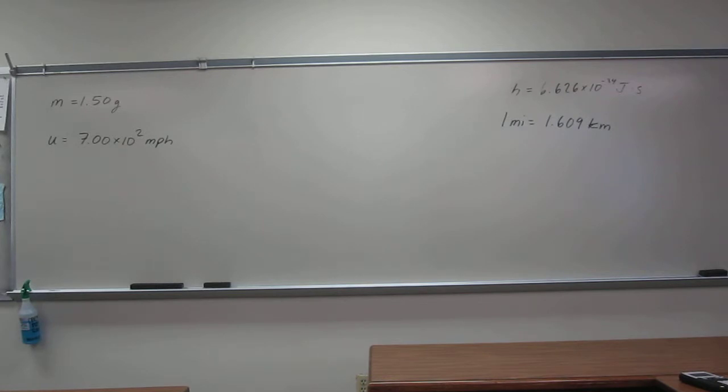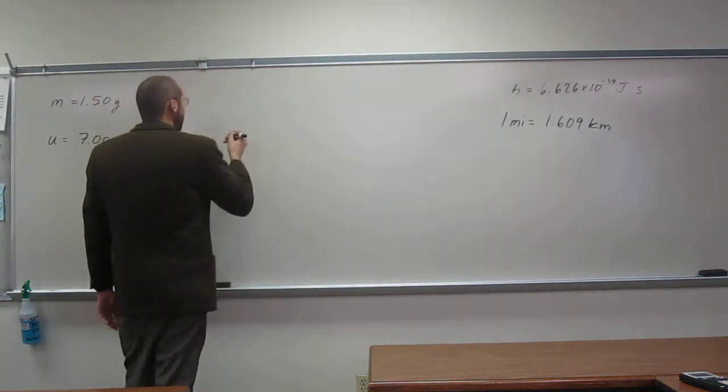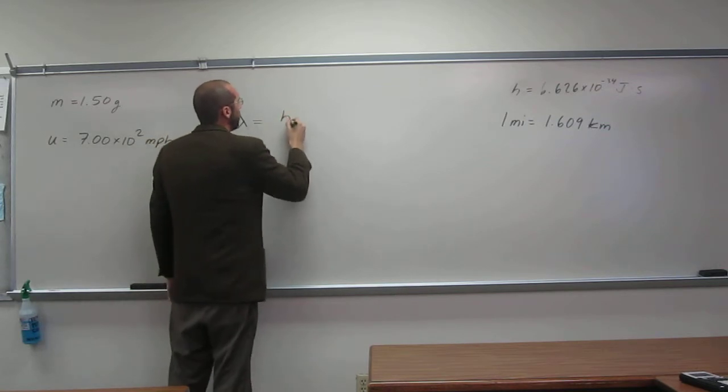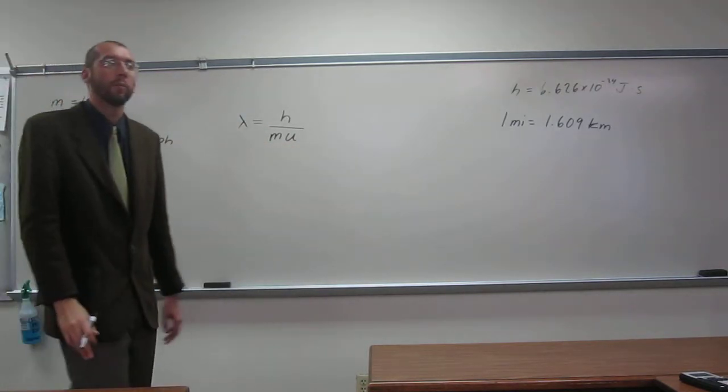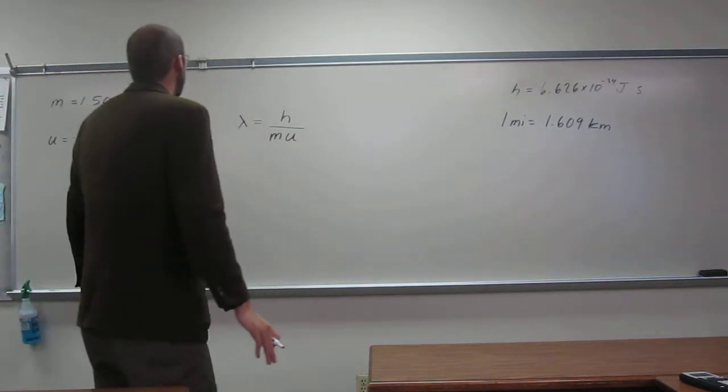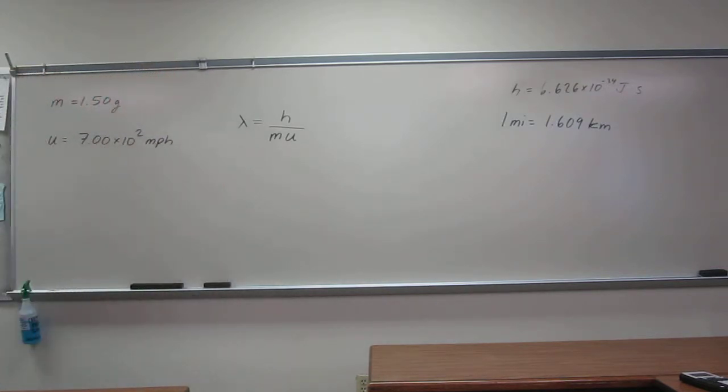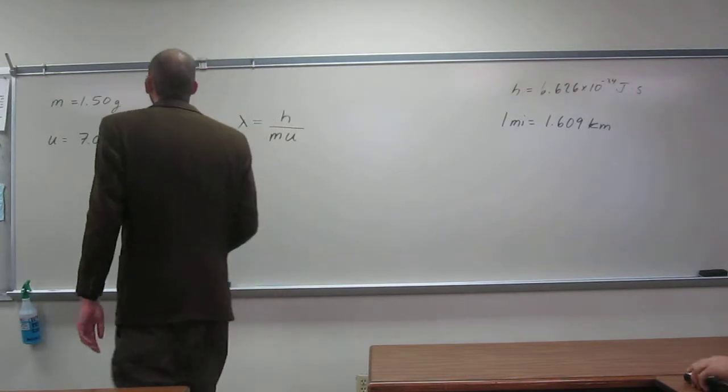What is the wavelength associated with this bullet? You have to remember the de Broglie equation: wavelength equals Planck's constant over mass times the velocity of the particular object. Even things that are enormous like this bullet or a person have a wavelength associated with them. That's what we're going to calculate right now.